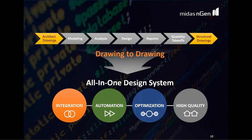Midas Engine starts from architectural drawings used for modeling, then performs analysis and design, generates design reports and quantity takeoffs, and finally produces structural drawings. So from drawing to drawing, it is an all-in-one design system with integration of all these processes and various automation tools to quickly generate the model and perform the analysis and design. Optimization in terms of accurate modeling and high-quality outputs can be generated in Midas Engine.